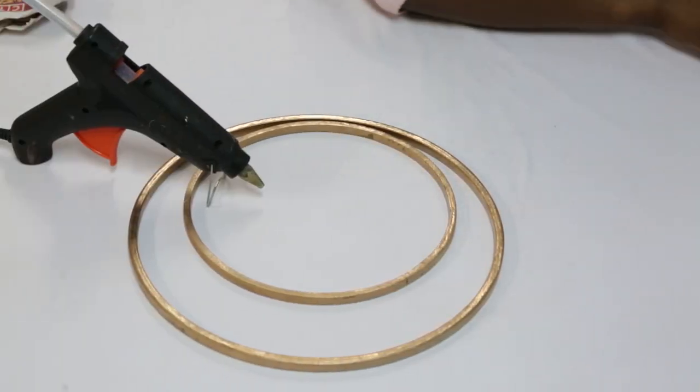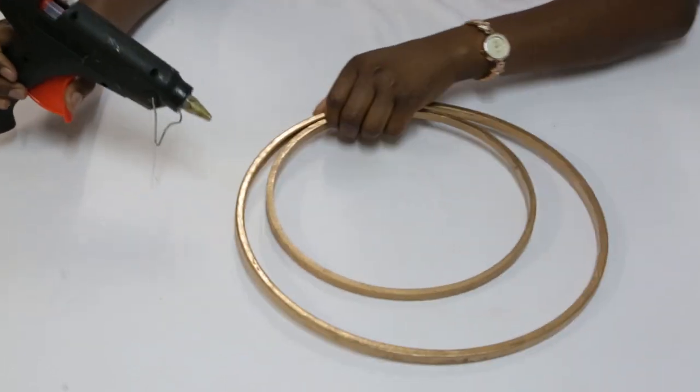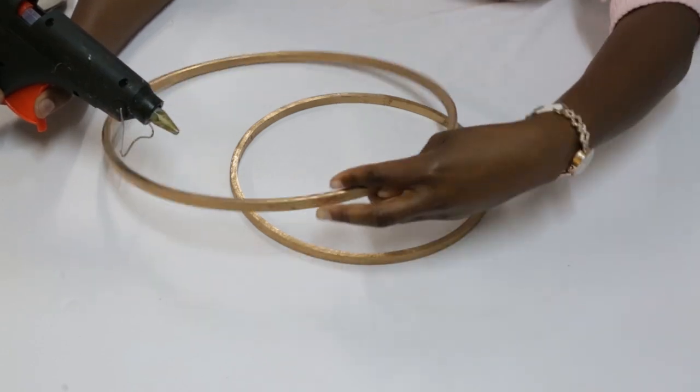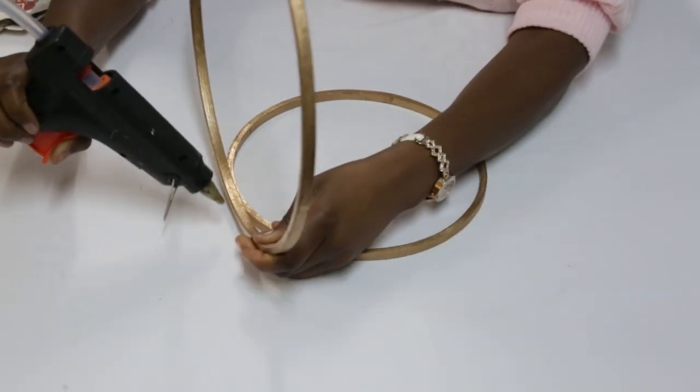So let's get started. The first thing that you'll do is to glue the smaller loop to the larger one. You can use any size.